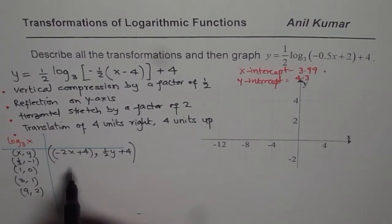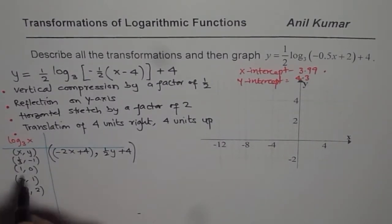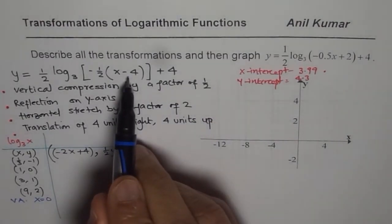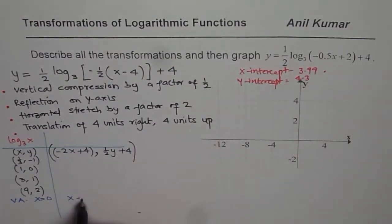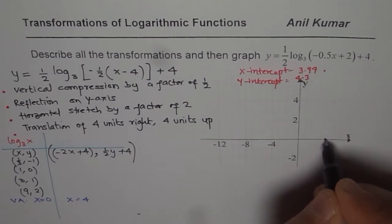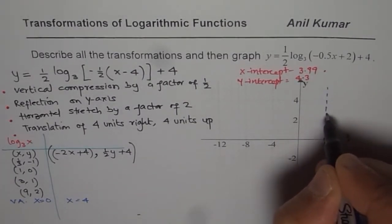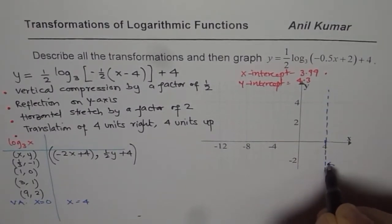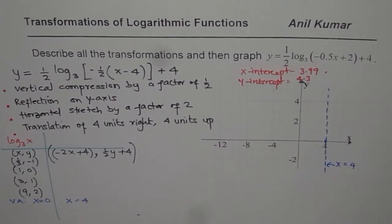So let us consider these values and see what happens to their transformation. Now one more important value is a vertical asymptote. So let me write down vertical asymptote at the end. So we say vertical asymptote for this graph will be x equals to 0. Now the vertical asymptote for the transformed function, since it moves 4 units to the right, will be at x equals to 4. So we can draw a vertical asymptote at 4 here and that is the vertical asymptote for our transformed function.